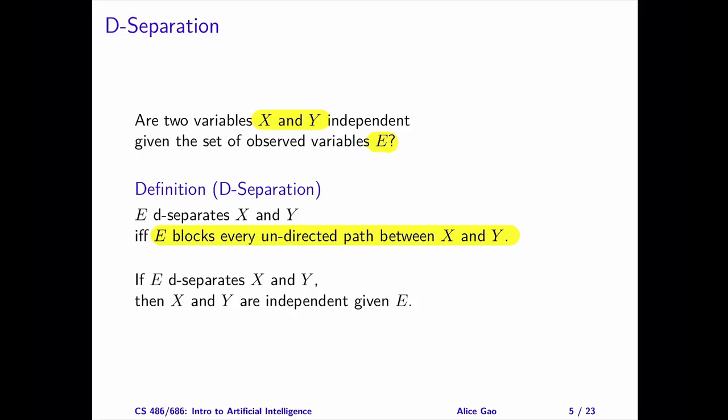Given this definition, our task boils down to the following: Pick a path between X and Y and pick a node on the path. Determine whether the node blocks a path or not. This leads to our next question: What does it mean to block a path? Let me explain this in three scenarios. Interestingly, these three scenarios correspond to the three key structures that I discussed previously.